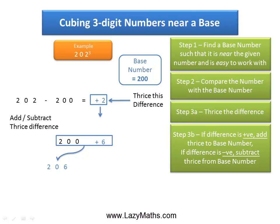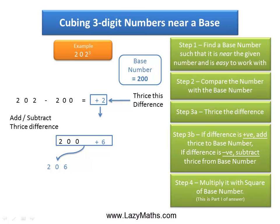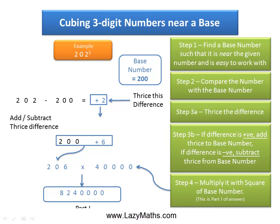The last step for calculating part 1 of the answer is to multiply 206 with the square of the base number. The square of 200 is 40,000. So we multiply 206 with 40,000 and we get 8,240,000 as part 1 of the answer.